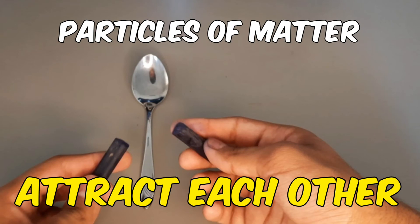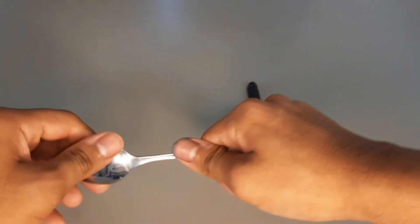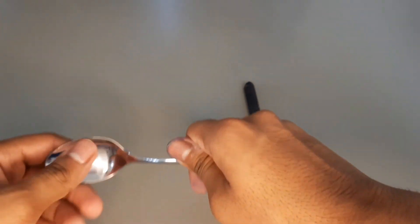Particles of matter attract each other. Can I break this metal spoon? Definitely not. Here particles of matter attract each other very strongly.